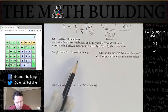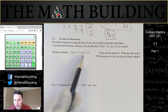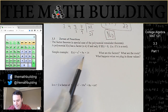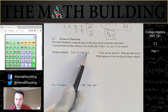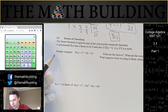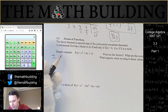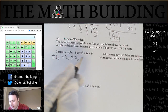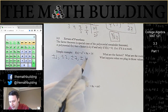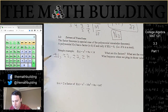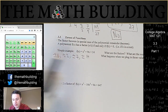We want to know what are the possible roots of this — what are the numbers that we can plug in for x so that all of this is equal to 0? The only possibilities are factors of 14. So the only possible answers are positive or negative 1, positive or negative 2, positive or negative 7, and positive or negative 14.